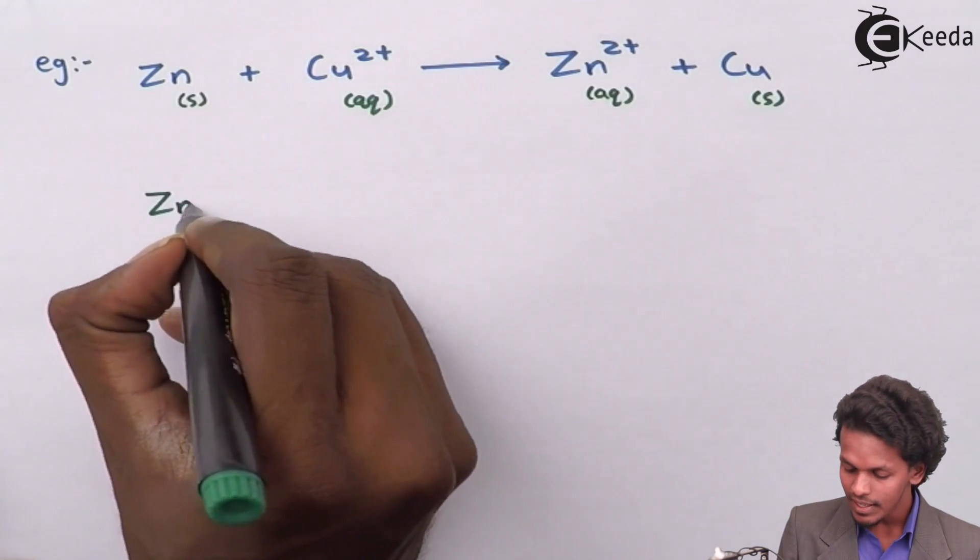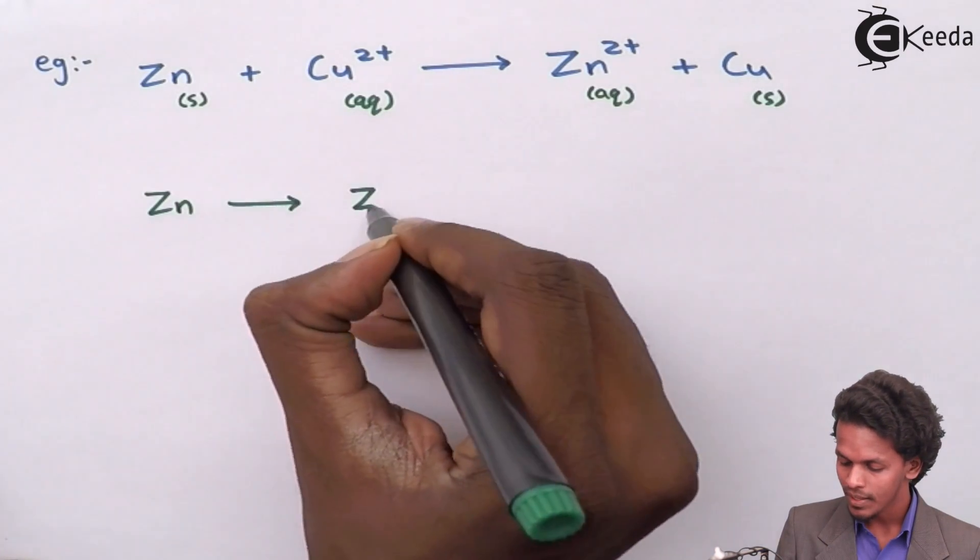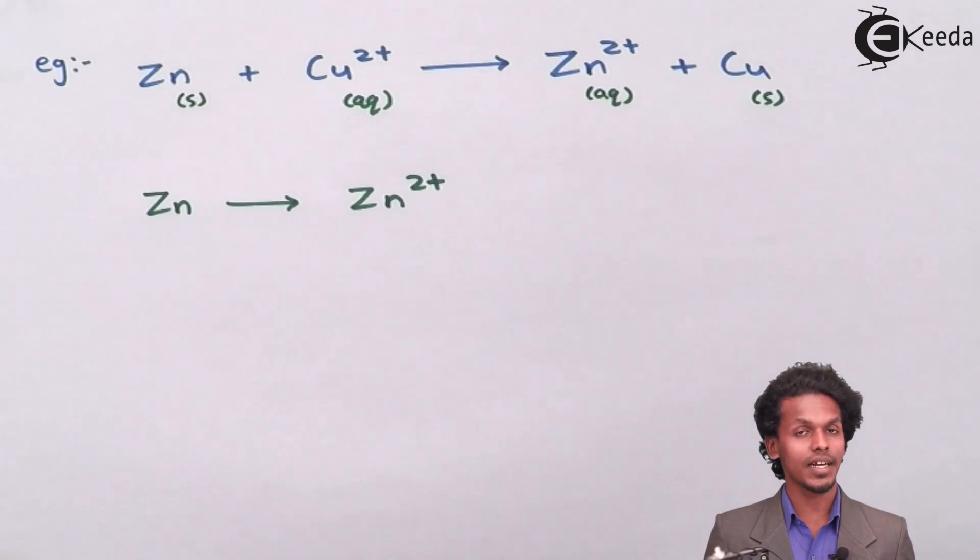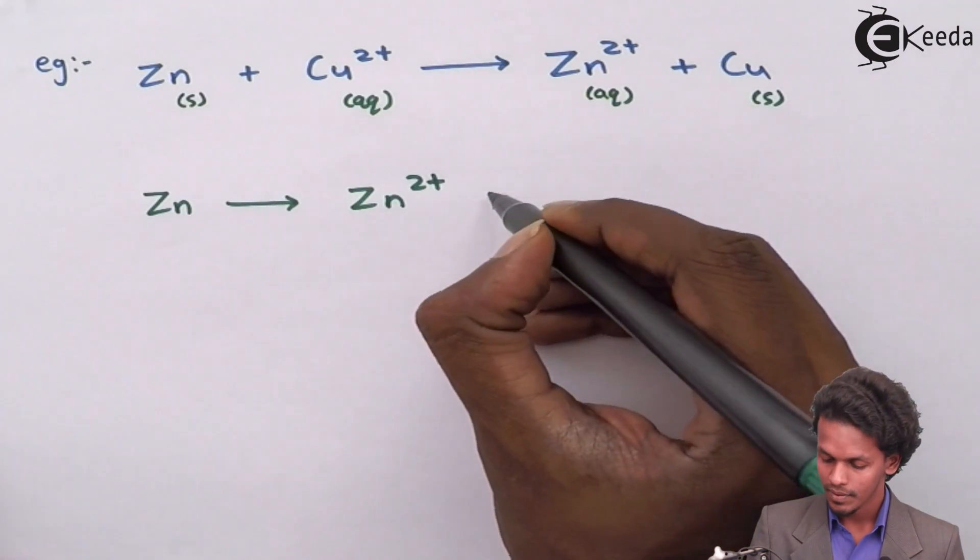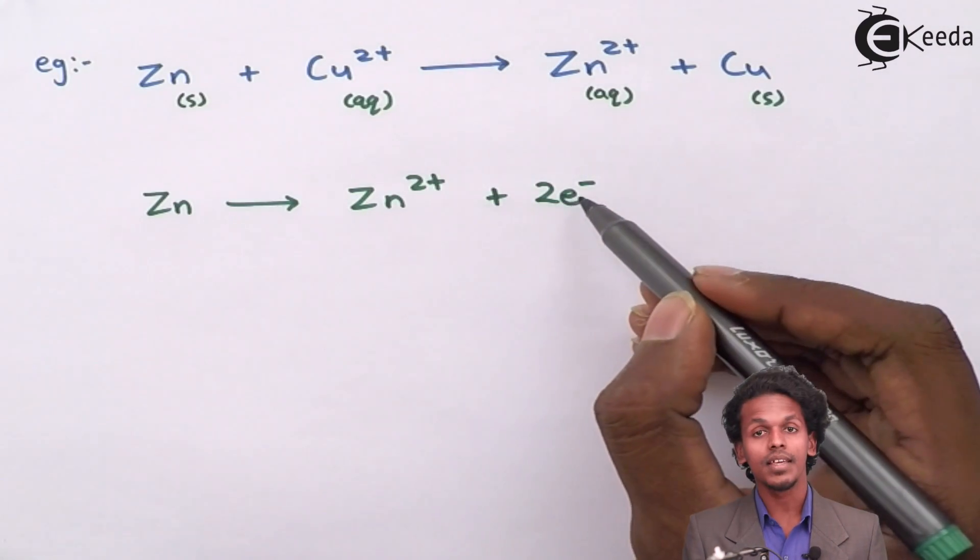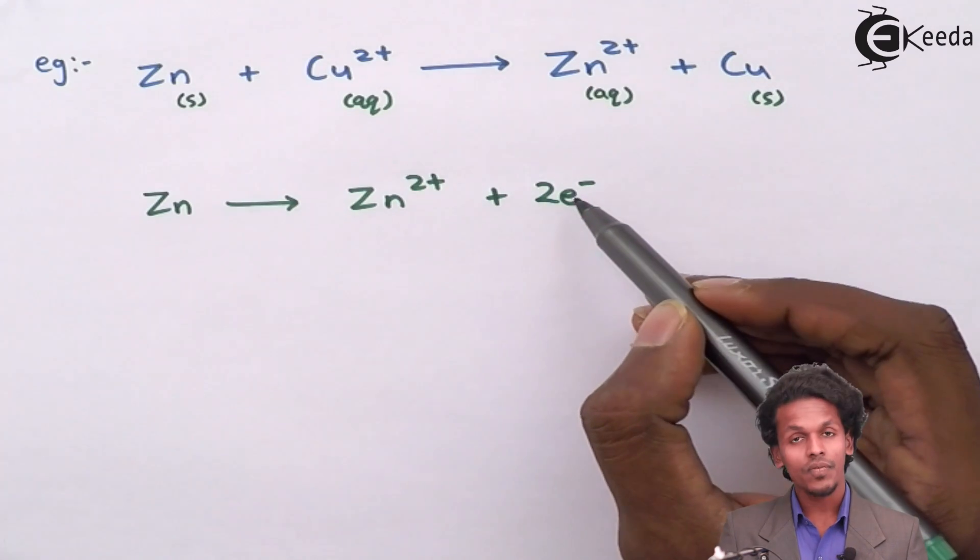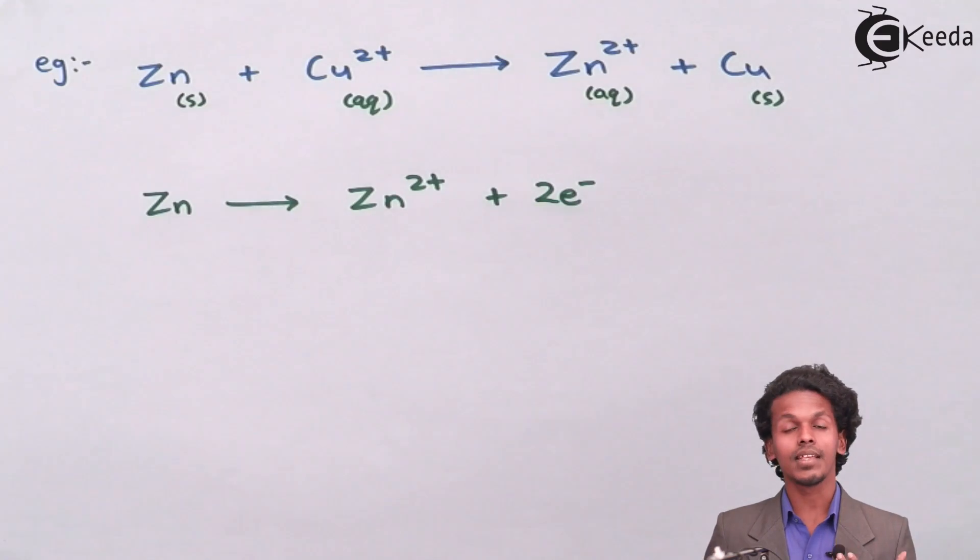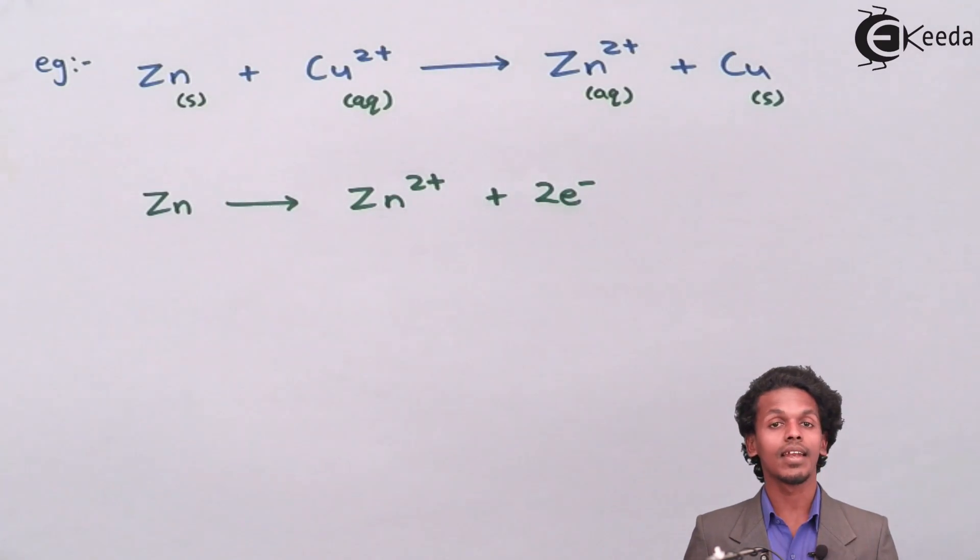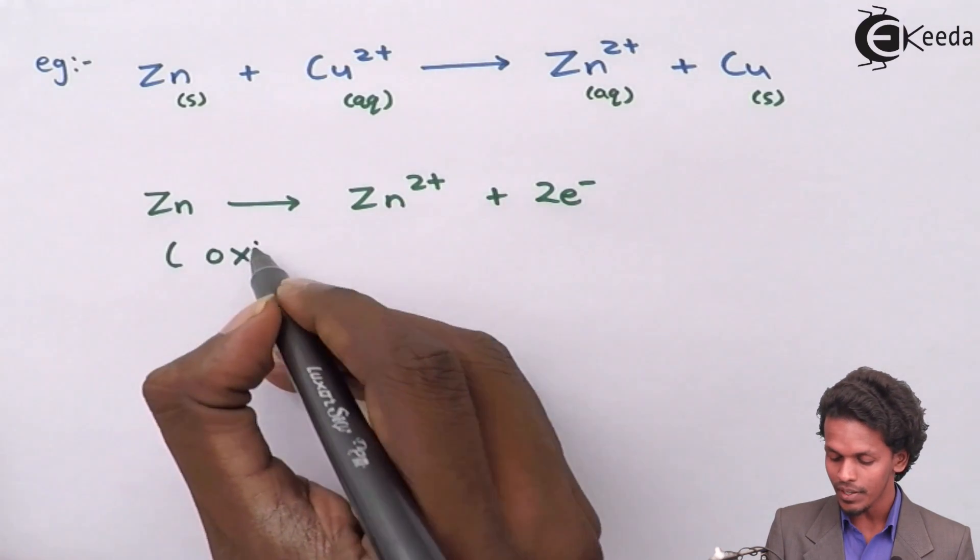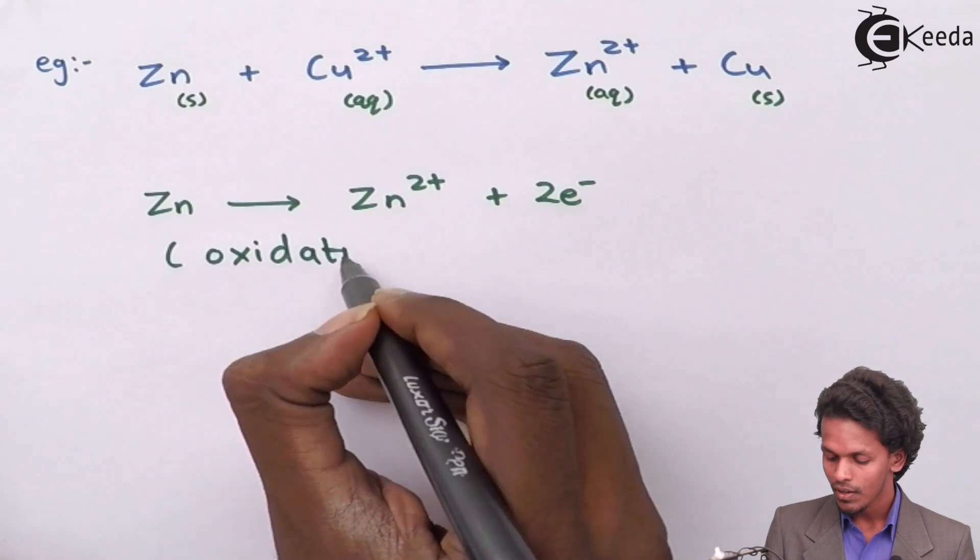Let us see what all kind of reactions are occurring in this chemical equation. As we can see, zinc is being converted into Zn 2 plus. Since Zn, that is zinc, has occupied 2 plus oxidation state, that means it has lost electron. And the total number of positive charge will be equal to the total number of electron. So zinc is behaving like an oxidation process. The process occurring here is oxidation.